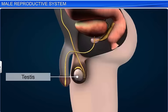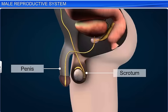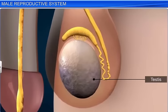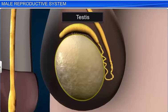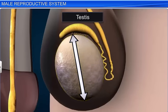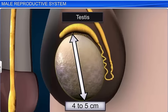The testes are covered by a sac-like protuberance of skin and muscles called the scrotum. The scrotum lies between the penis and the anus. The testes need to be at a temperature of 2 to 2.5 degrees less than the body temperature to produce sperms. Hence, the scrotum is outside the body and has a temperature lower than the body. The testes are oval in shape, with a length of about 4 to 5 centimeters, and a width of about 2 to 3 centimeters.